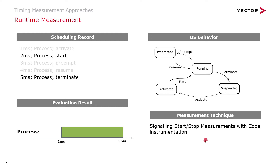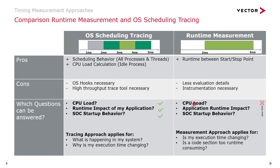This is a typical and quite easy-to-implement approach. Let's compare both techniques. What you get is the complete execution time — for example two to five milliseconds. On the left-hand side is OS scheduling tracing and on the right-hand side is runtime measurement. I would like to compare them by their pros and cons, and mainly by what questions I can answer as a customer when using one or the other.